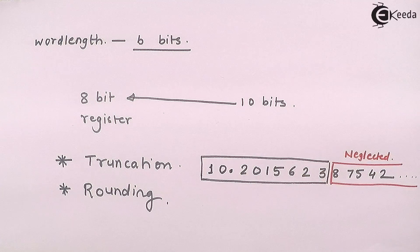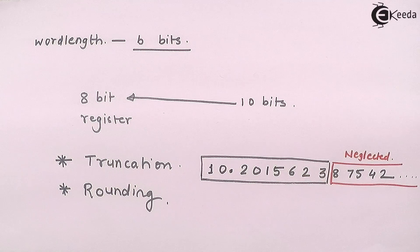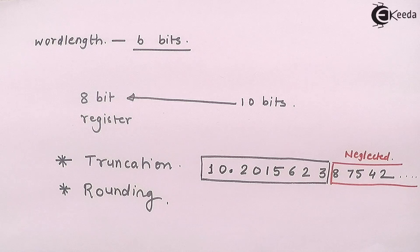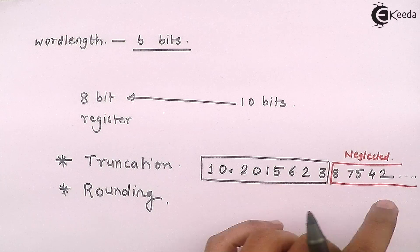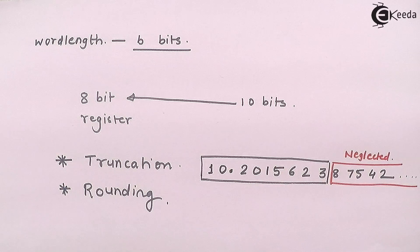Then what I am doing? I am representing a very wide number into a short number. So what will be the effect on neglecting 8, 7, 5, 4, 2? That we have to study.